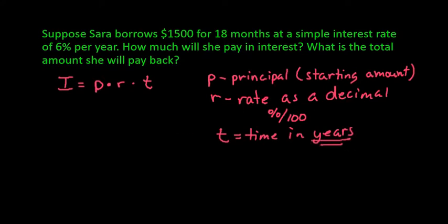There's a couple things that we have to do in order to use this formula. The P would be $1,500. The rate, we would take the 6 and divide it by 100, which would give us 0.06. And our time, we have to convert it to years.